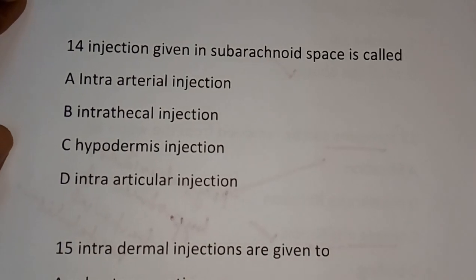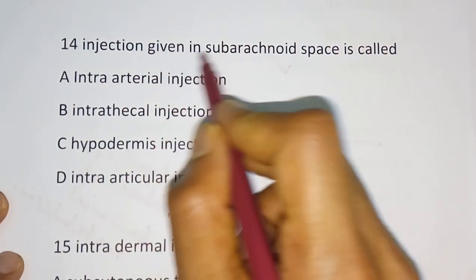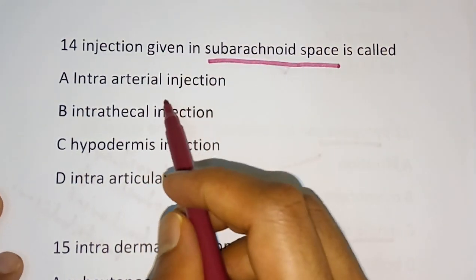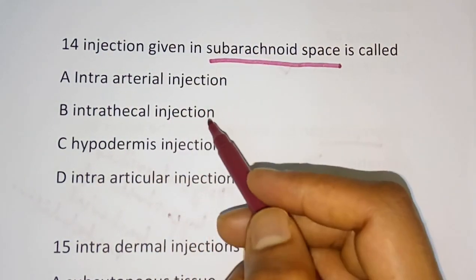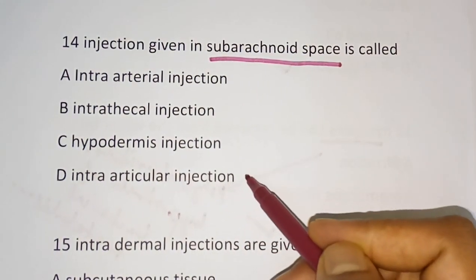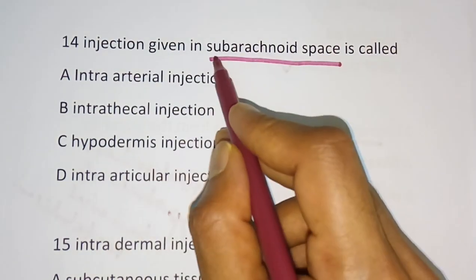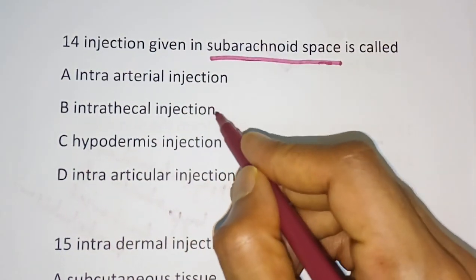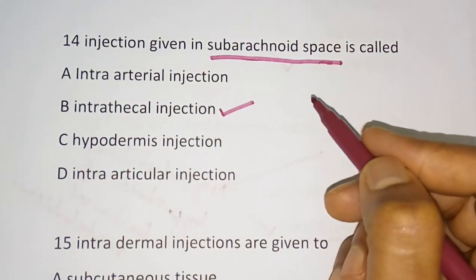Question 14: Injection given in the subarachnoid space is called what? Options: intraarterial injection, intrathecal injection, hypodermic, intraarticular injection. The correct answer is intrathecal injection.